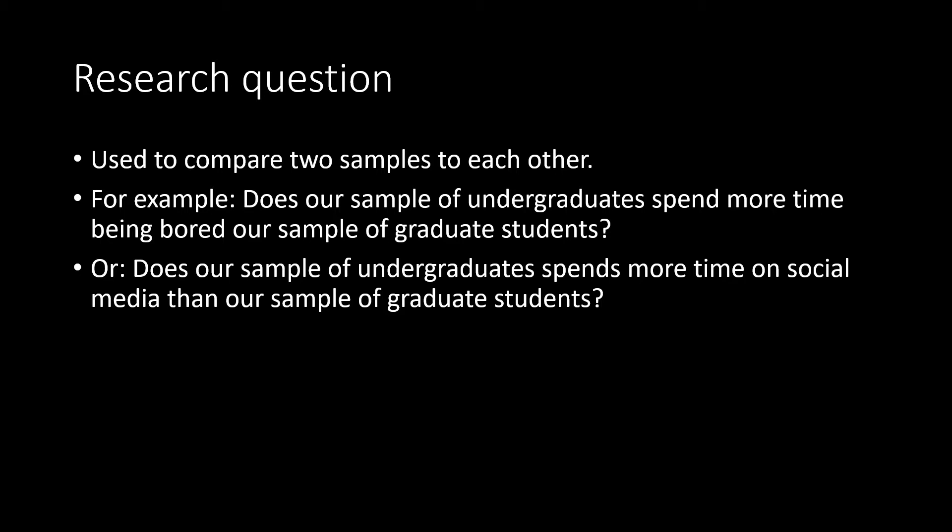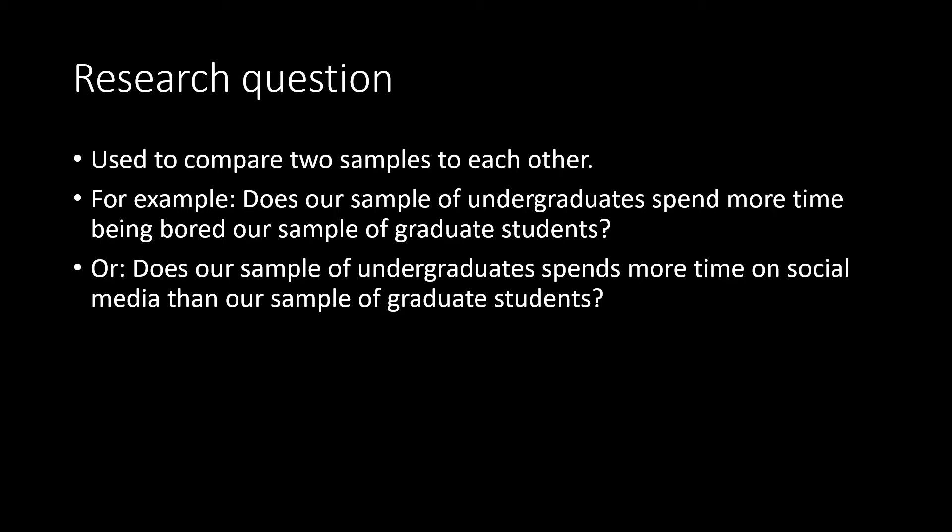In both of these situations, we have two separate samples that we're comparing to each other. In order to conduct an independent sample t-test, we're going to need to meet these assumptions. First, we have two samples that are independent of each other, meaning that there is no overlap between these samples. Our variable will need to be interval or ratio scale. Our samples need to be approximately normally distributed, and the variance of our two samples will need to be roughly equal.